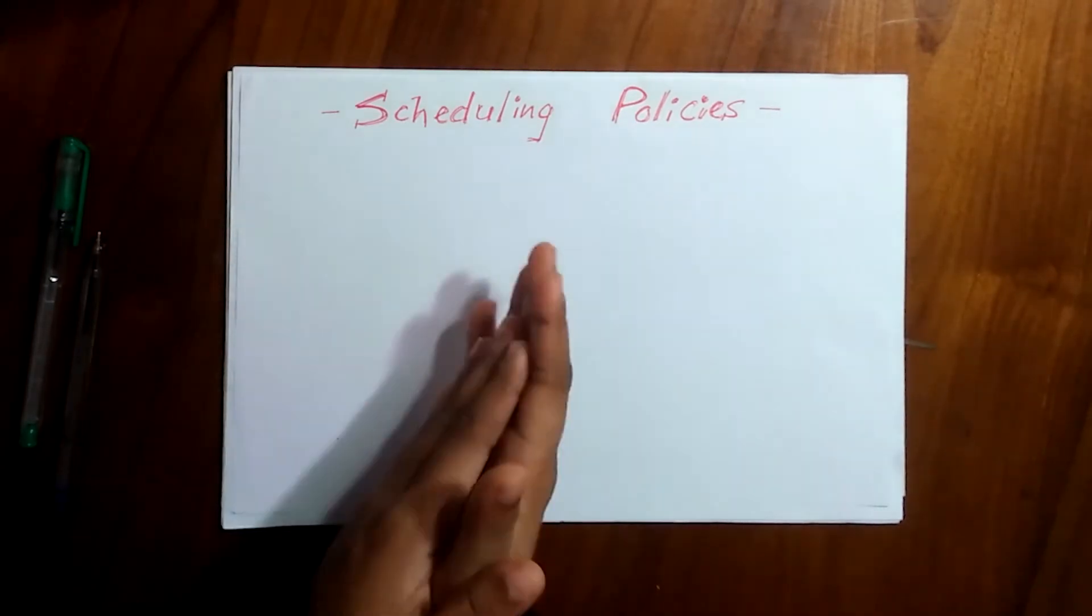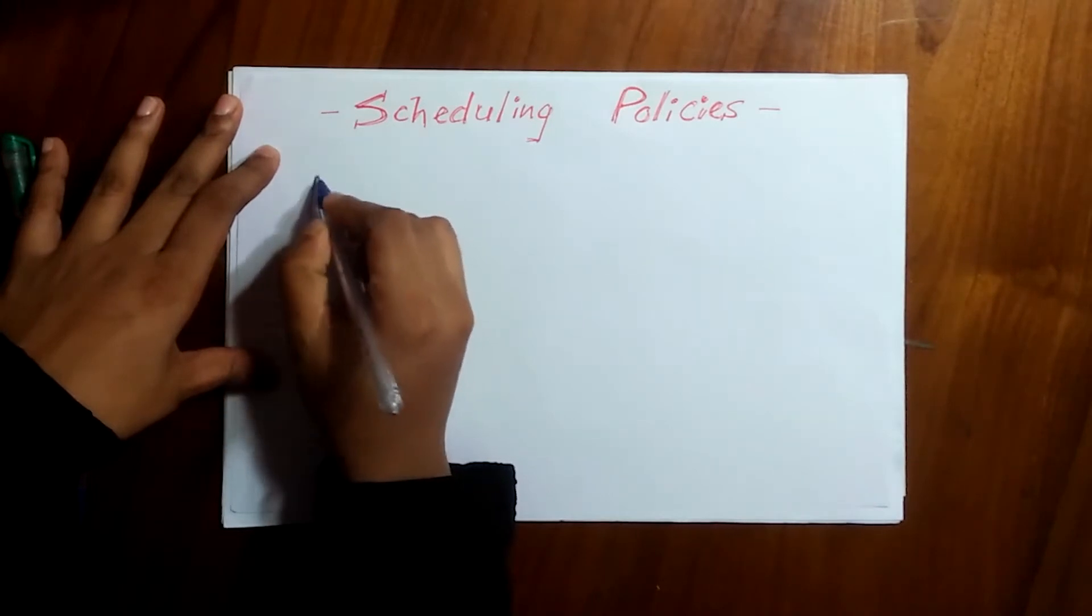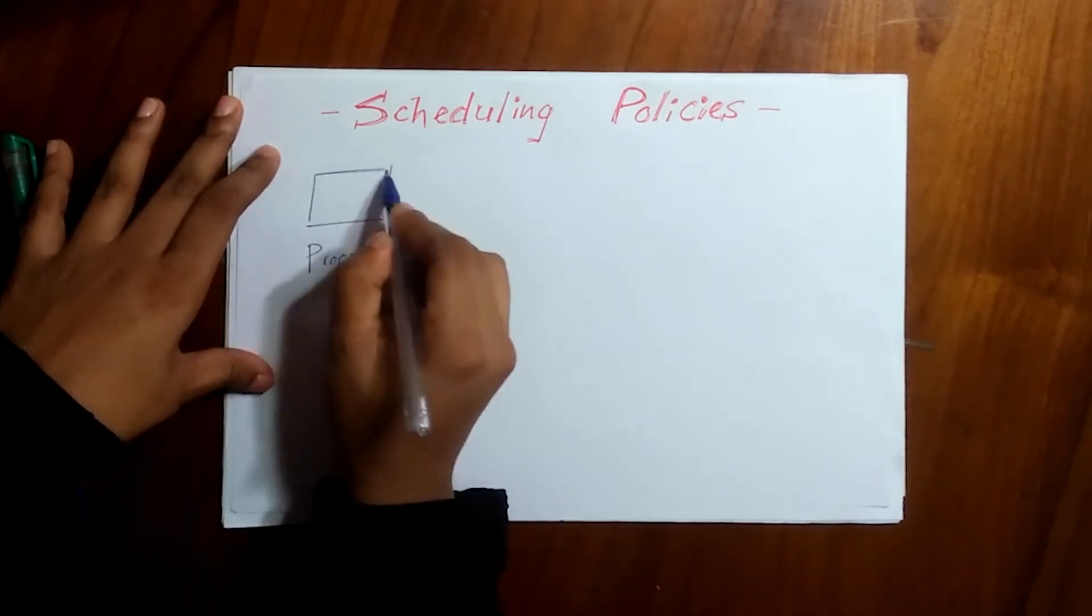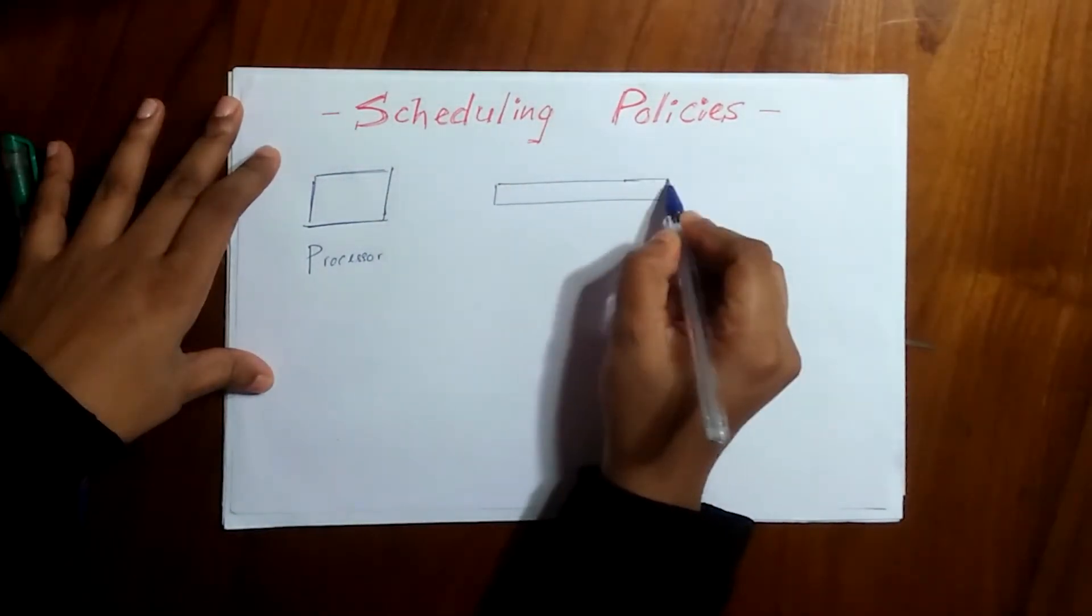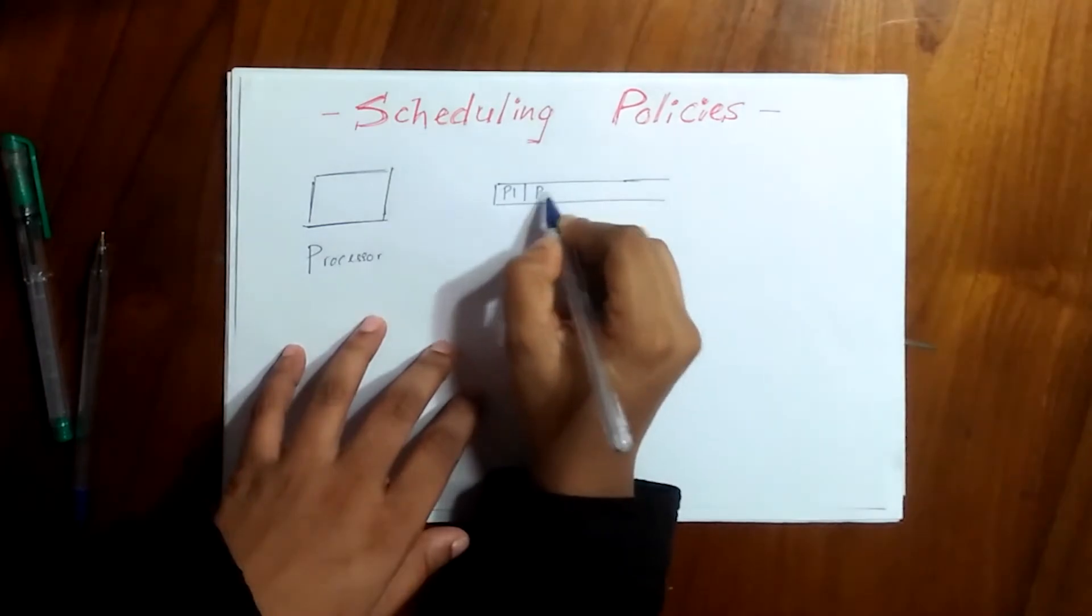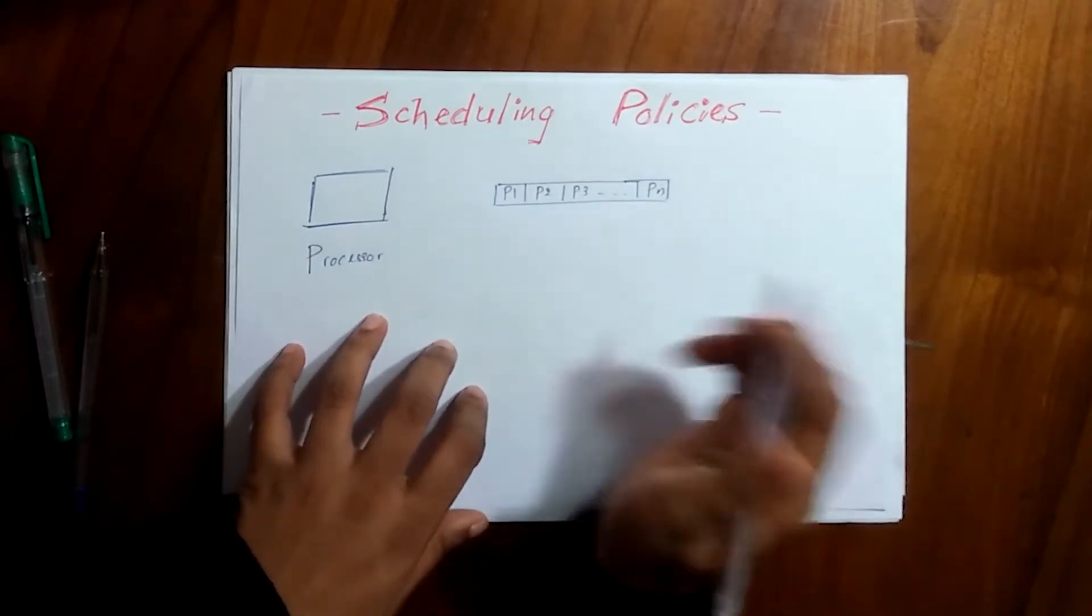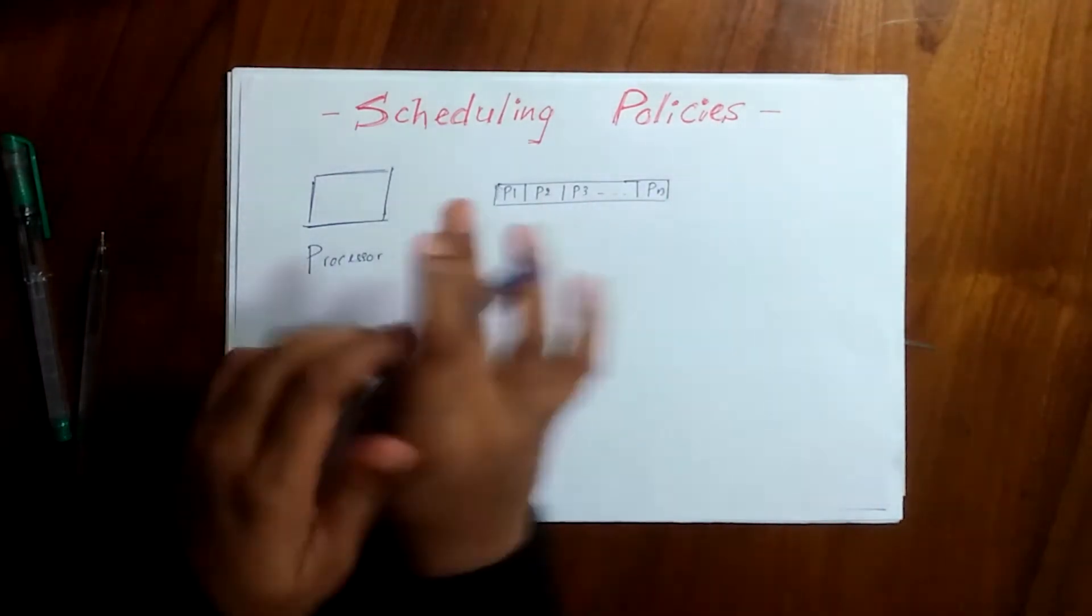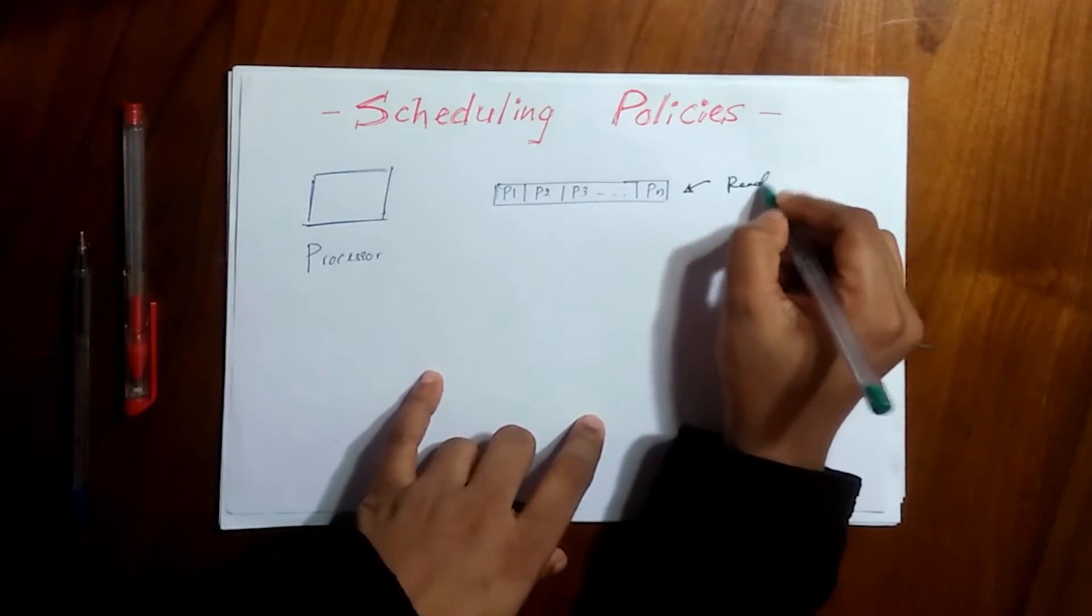In a computer we have a processor, and also we have lots of processes. Let's take them as process one, process two, P3, likewise to Pn. These processes are waiting in a ready queue.